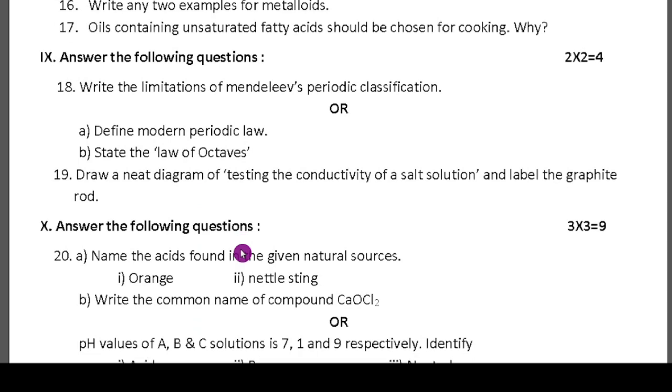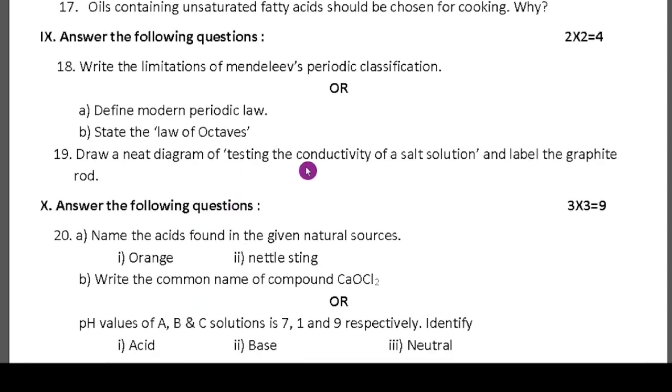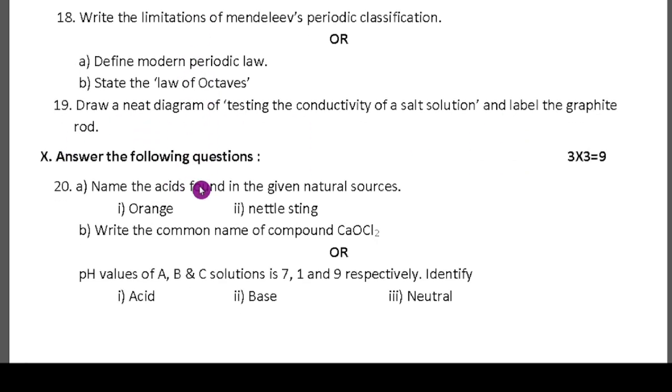Next: neat diagram of testing the conductivity of a salt solution and label the graphite rod. Each question carries two marks. Tenth main, answer the following questions. Twentieth question: name the acids found in the given natural sources orange and nettle sting. Next B: write the common name of the compound CaO Cl2 - 100% is bleaching powder. Different questions are there, you can select which one you know and answer that one.